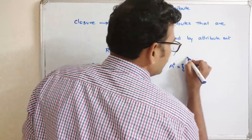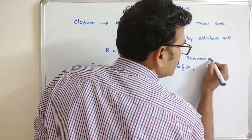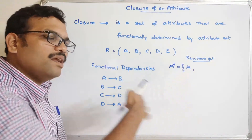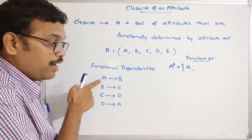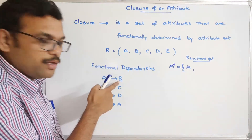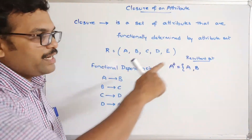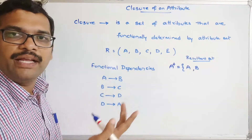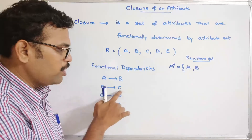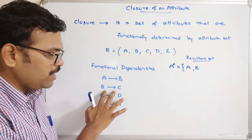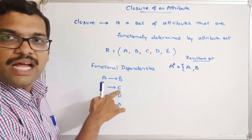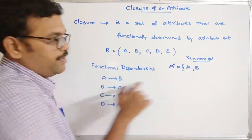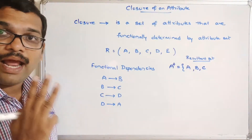So b is added to the resultant set. Now we have {a, b}. Since b→c, we can also determine c. The resultant set becomes {a, b, c}. By knowing a, b, or c, or combinations thereof, we can get more attributes. Since c→d, we can also determine d. Now the resultant set has four attributes: {a, b, c, d}.